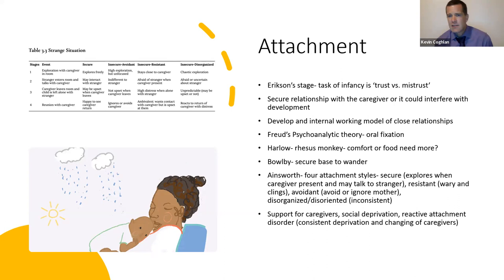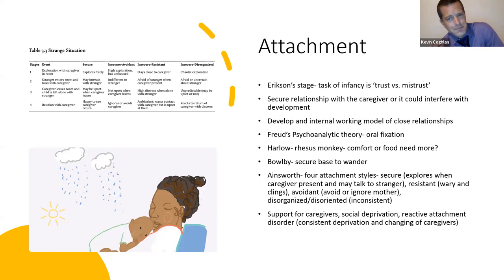Ainsworth breaks out four attachment styles. So you have Erikson's stages, Harlow's theory of attachment and comfort needs, and then Ainsworth's theories of attachment styles. To break down all people into just four types of attachment styles, to me, is pushing it a little bit. I feel like there's more diversity, but it's an interesting way to at least perceive this idea of attachment styles.